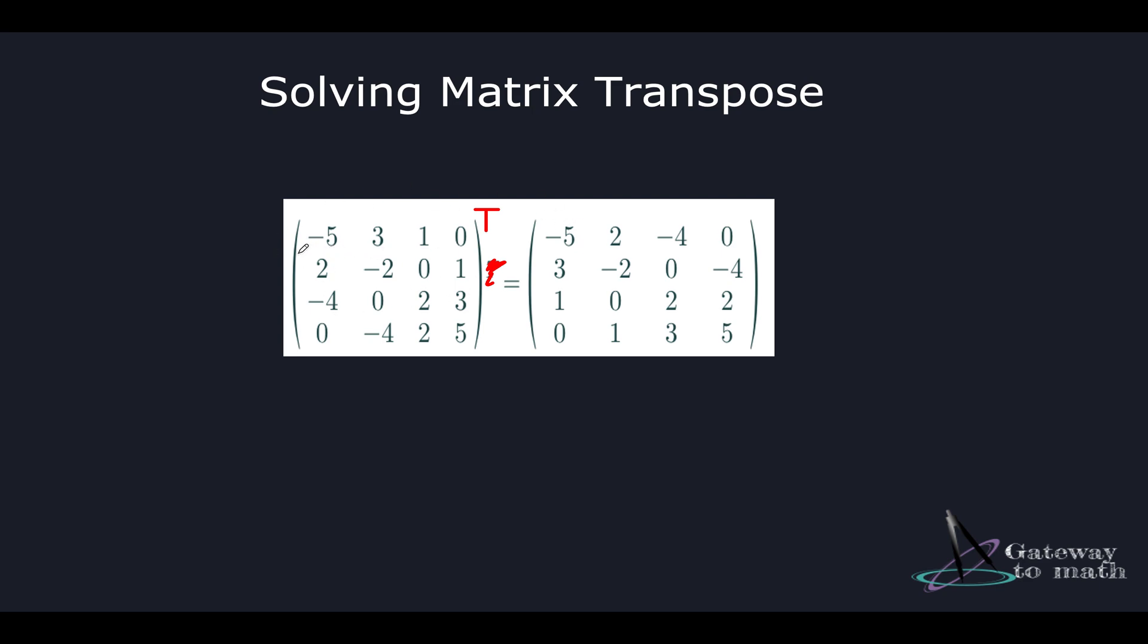To find the transpose of the matrix, all you do is replace all the row entries with the column entries. So for instance, your first row will be replaced with the entries in the first column, the second row will be replaced with the entries in the second column.